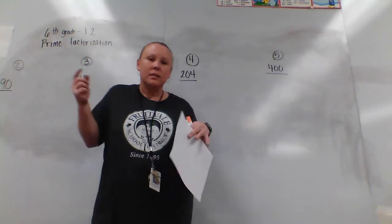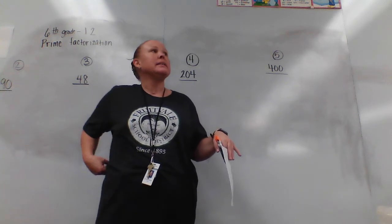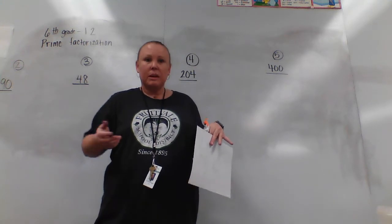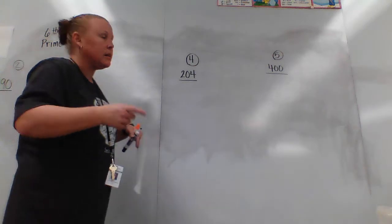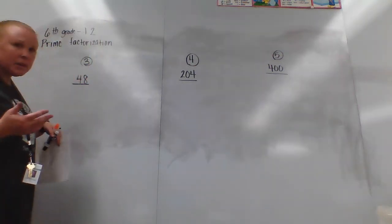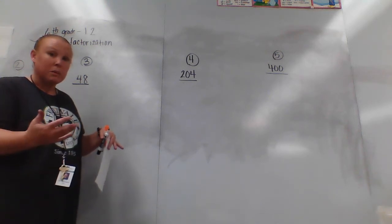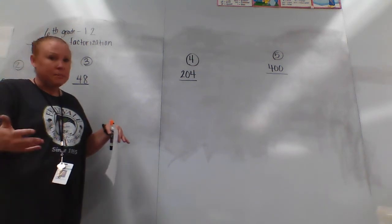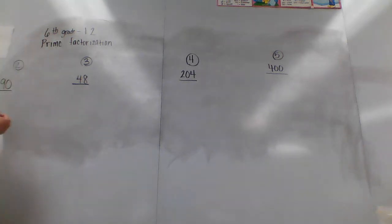Hi guys, we are back with sixth grade chapter 1 lesson 2 on prime factorization. You want to know your prime numbers for doing this, and you can go on to Google Images or Google Spreadsheets and download or print a list of your prime numbers. Basically, a prime number is a number you can only get to by multiplying 1 by itself. So 2 is a prime number because 1 times 2 is 2, and you can't get to it any other way. 7 is a prime number — you can't get to it any other way than 1 times 7.